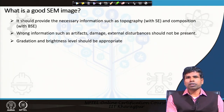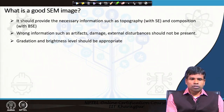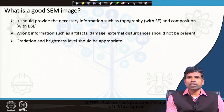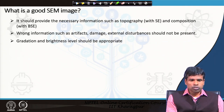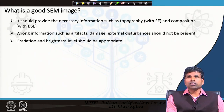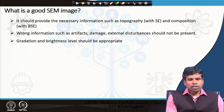Higher atomic number means more backscattered electron yield and those regions will appear much brighter, as you have seen in previous lectures. The SEM image should provide the information we need from our specimen. Additionally, artifacts, damage, and external disturbances should not be present, and we should have a gradation and brightness level that is appropriate — this is what is important for a good SEM image.